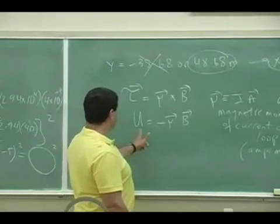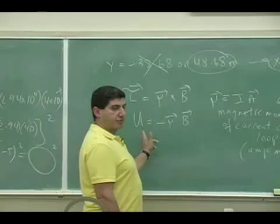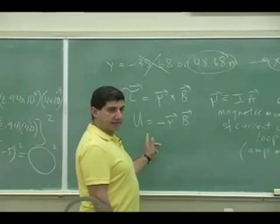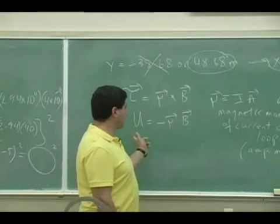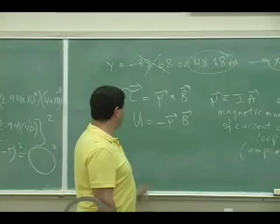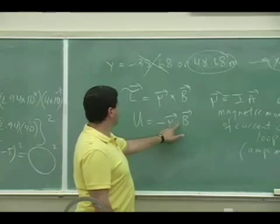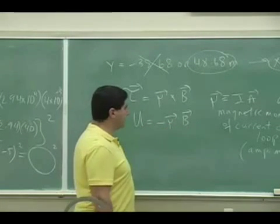This is the potential energy of a magnetic dipole — of a magnetic moment — and it equals negative mu dotted into B.